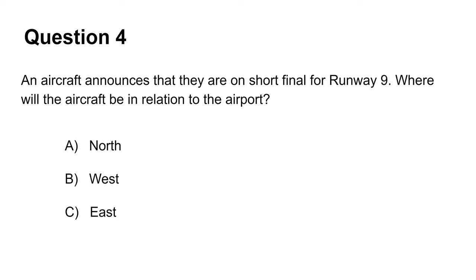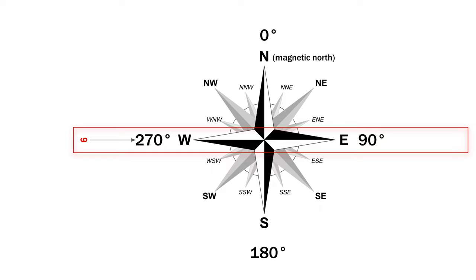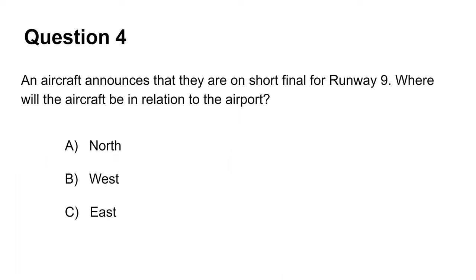The fourth question asks you to identify the position of the aircraft relative to the airport, given that the aircraft is on the short final for runway 9. The runway will run at exactly 90 degrees with landing from west to east. Being on the short final would place the aircraft right in front of the runway on the west and heading east. Hence the answer is B, meaning that the aircraft is to the west of the airport.